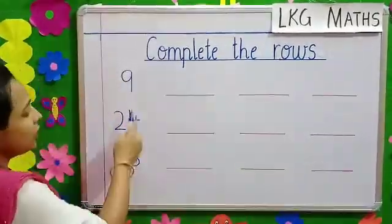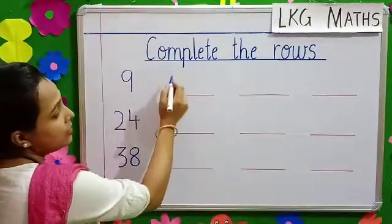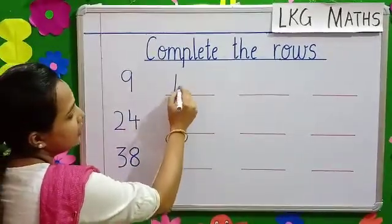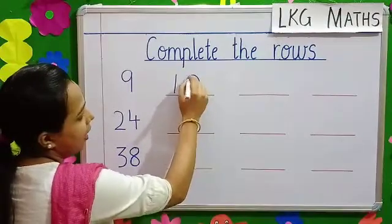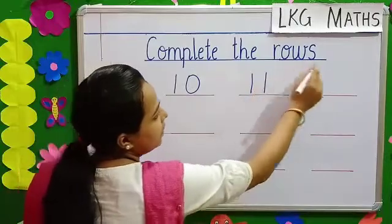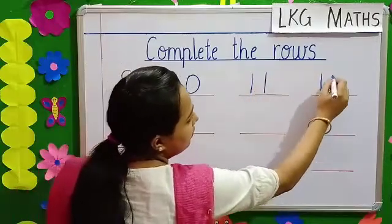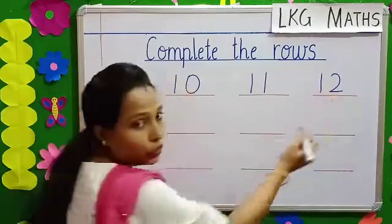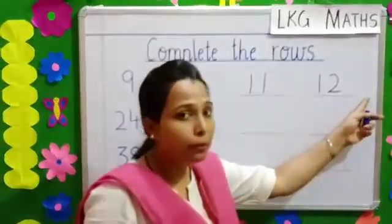So, here the given number is 9. What comes after 9? 10. After 10, 11. After 11, 12. Now, you see there are no more blanks here.